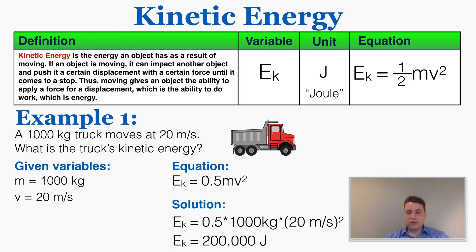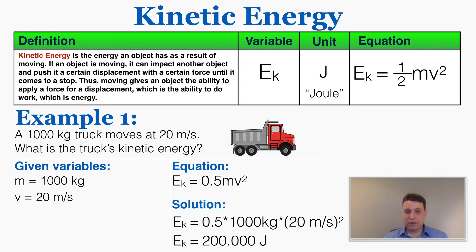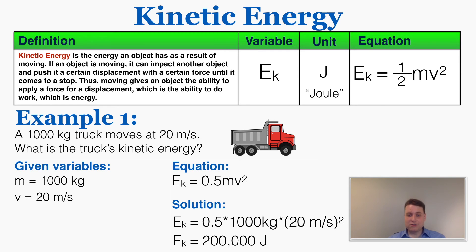Students are often thrown off by numbers this large and assume something is wrong. Just for context, one joule is about the amount of energy it takes to lift one apple by about one foot. So if you think about a 1,000 kg truck going at 20 m/s impacting a gigantic pile of apples, it could probably move a lot of them quite far. One joule is really not very much energy, so 200,000 joules definitely makes sense for this problem.